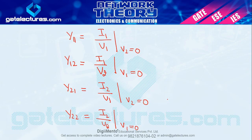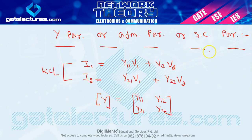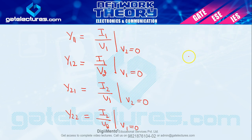This is the same as the Z parameter case, but here voltage equals zero — that means short circuit. Voltage becomes zero under short circuit conditions, while current becomes zero under open circuit. That is why Z parameters are called open circuit parameters, and Y parameters are called short circuit parameters.